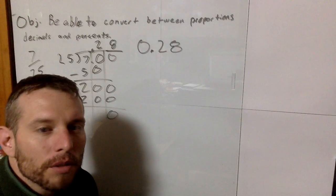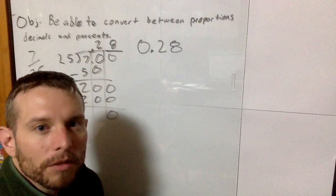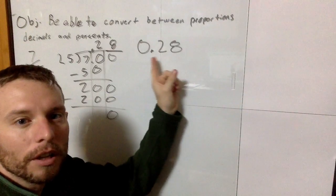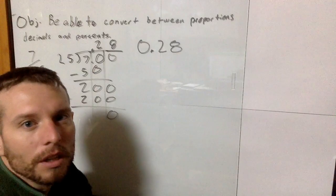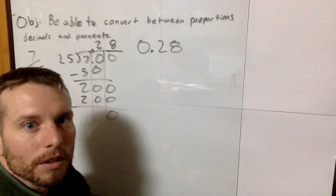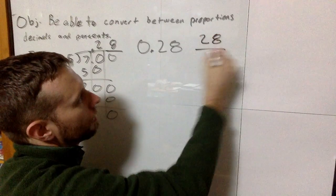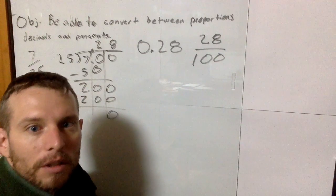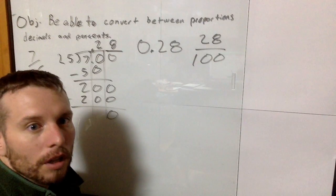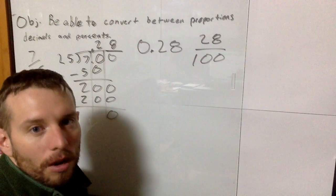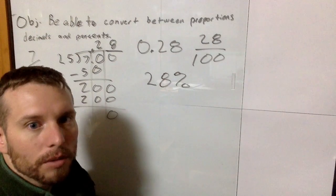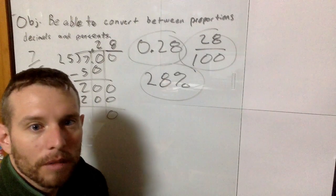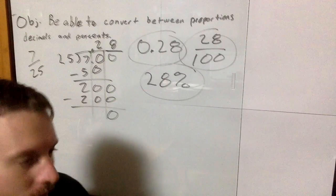And if you remember, percents means out of 100. And sometimes we do read this decimal, 0.28, but we know that this is the ones place, this is the tenths place, this is the hundredths place. So this can also be read as 28 hundredths. So 28 hundredths is 28 over 100. And if we want to convert that to a percent, well, since percent means out of 100, this is 28 out of 100, so this is also 28%. And so we can see how these three things are three different ways to write the same amount.